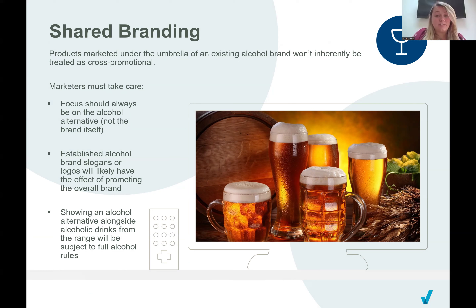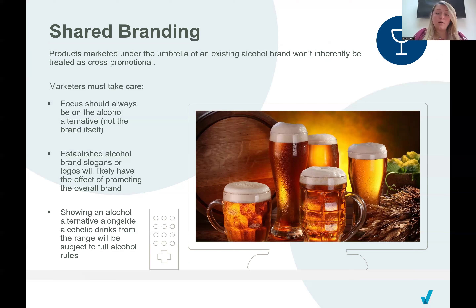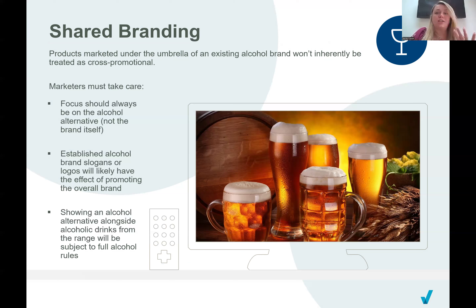In terms of content, marketers should make sure that the focus is always on the alcohol alternative rather than the brand itself. If the brand name was prominently shown by itself in an ad but not being used in the context of the specific alcohol alternative product name, it would likely be seen as promoting the brand as a whole, consequently having the effect of advertising alcoholic drinks, and therefore the full alcohol rules would apply. The same thinking applies to logos or slogans easily recognisable as being linked to an established alcohol brand — unless the logo or slogan had been adapted specifically for the alcohol alternative product, say by changing the colour or appearance of a logo or altering the wording of a slogan, they would be seen as promoting the overall brand, having the effect of advertising alcoholic drinks, and would be subject to the full alcohol rules.